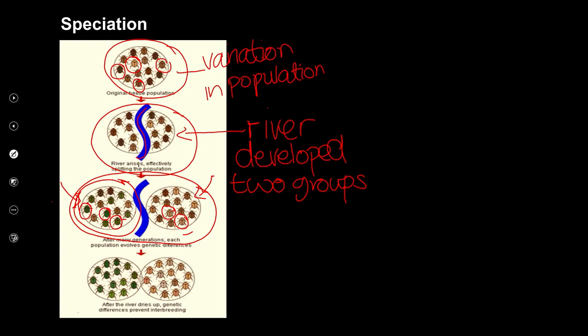After a very long time, even if there were a drought and the river dried up so the beetles could mingle again, we would find there were too many changes that took place in each population separately, so they would no longer be able to interbreed. We would then say that they are different species.